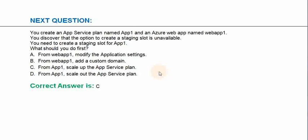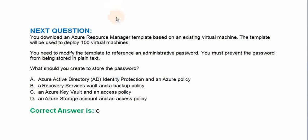Option D: From app1, scale out the app service plan. The correct answer is Option C.